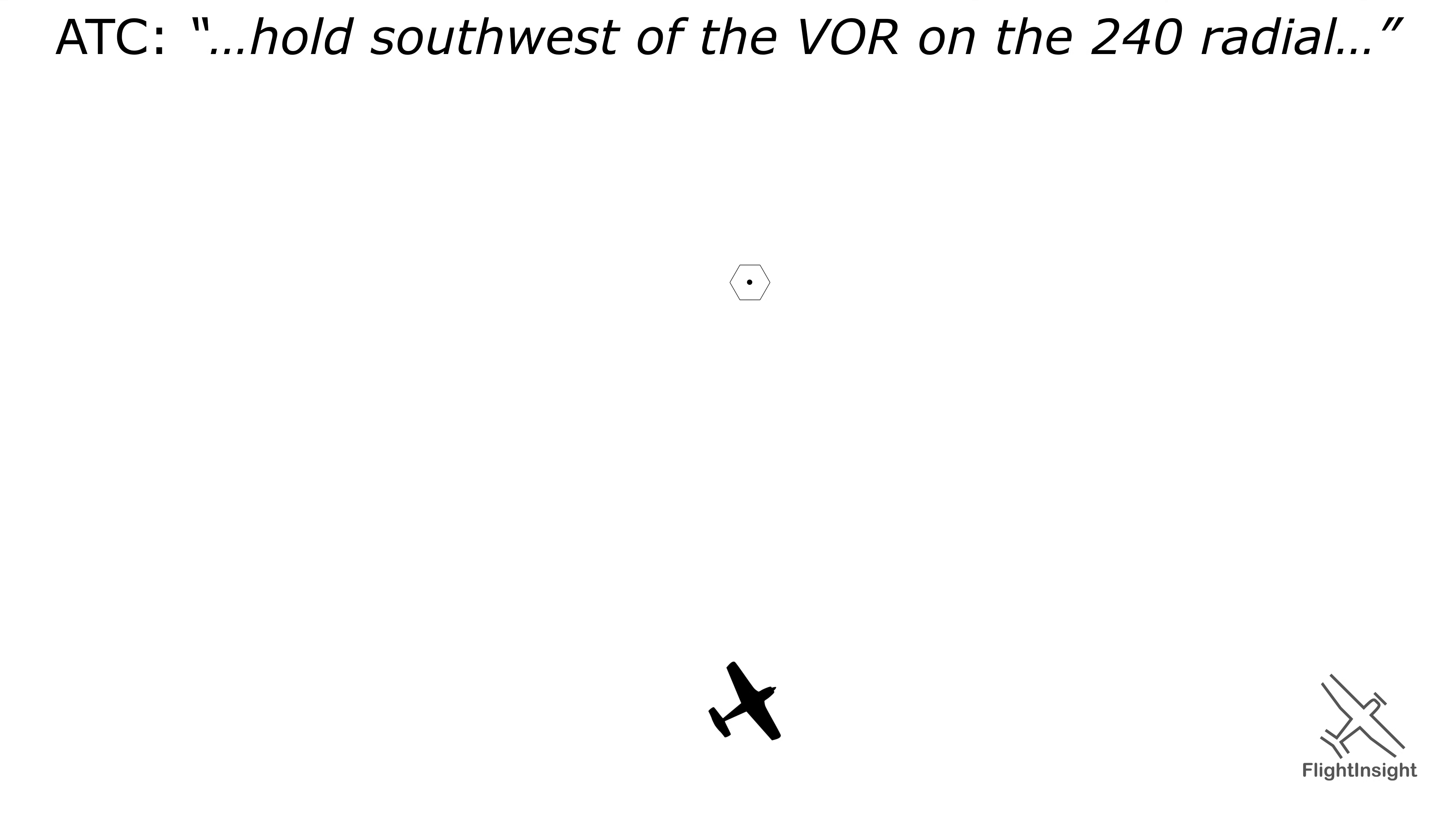How do you know what kind of entry to make? Should it be direct, parallel, or teardrop? A lot of people use something called the thumb method.